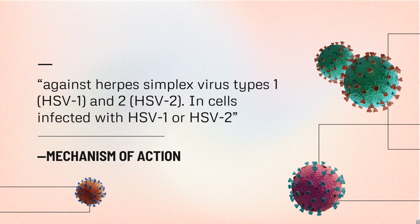In vitro studies show that penciclovir triphosphate selectively inhibits viral DNA polymerase by competing with deoxyguanosine triphosphate. Inhibition of DNA synthesis in virus-infected cells inhibits viral replication, while DNA synthesis in cells not infected with HSV is unaltered. Resistant mutants of HSV can occur from changes in viral thymidine kinase or DNA polymerase. The most commonly encountered acyclovir-resistant mutants deficient in viral thymidine kinase are also resistant to penciclovir.